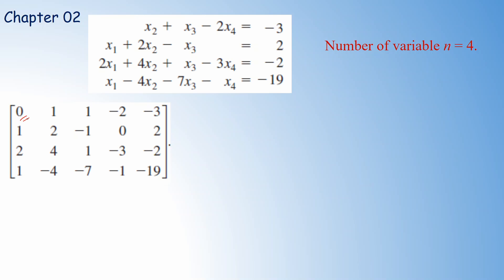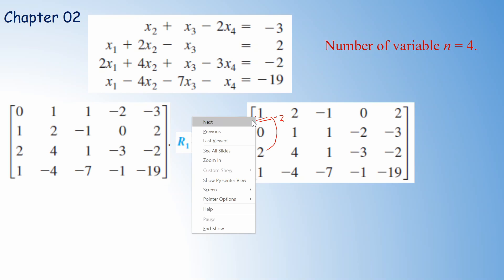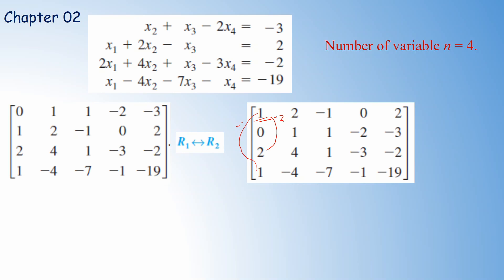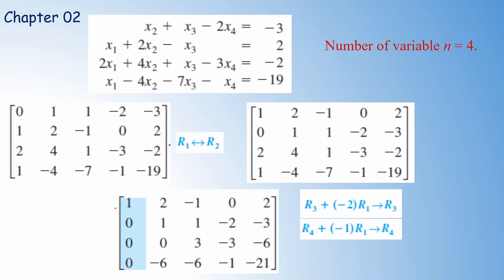In the augmented matrix, we have a 0 in the leading position, so we interchange the second row and the first row to make the pivot non-zero. Now we have 1 as the first entry; all entries below this 1 should be equal to 0. Multiply the first row by minus 2 and add into the second row to make that entry 0. After these operations, the first column of the matrix has all entries below the pivot equal to 0.